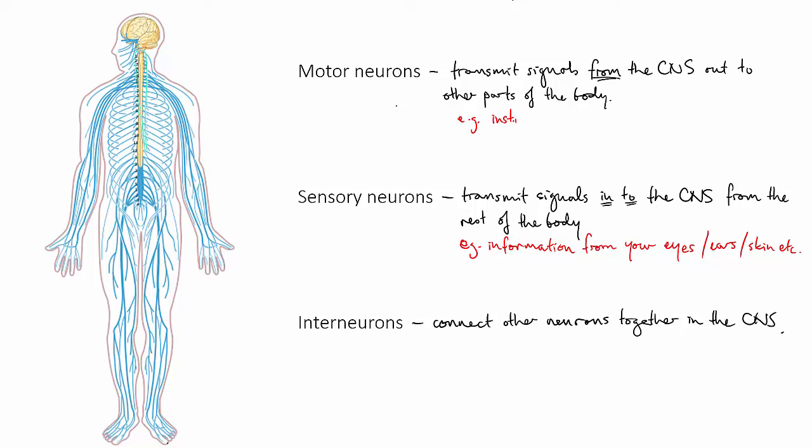On the other hand, if the CNS needs to make something happen, like make your heart beat faster or wiggle your toes or blink your eyes or rapidly pull your hand away from that hot dish, it is motor neurons that send those signals to the relevant part of the body.